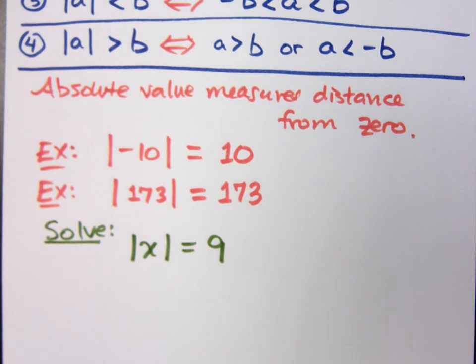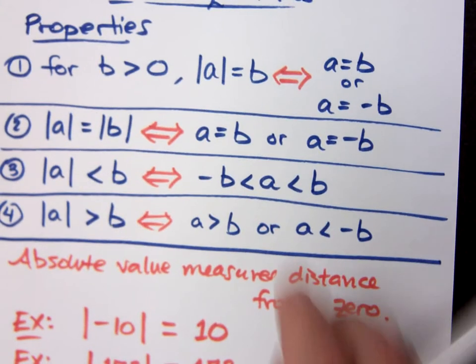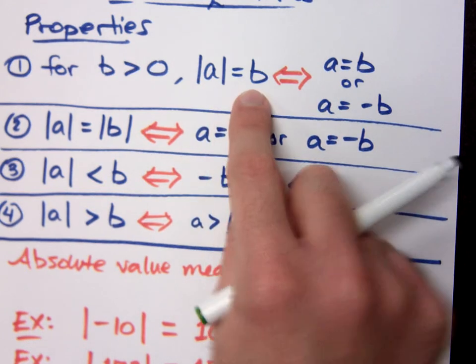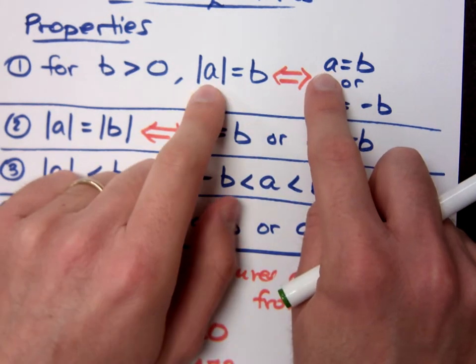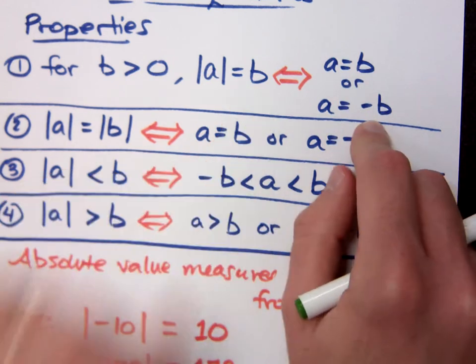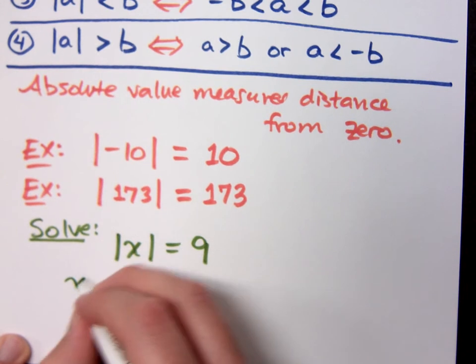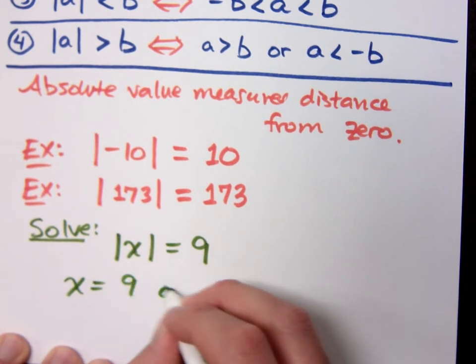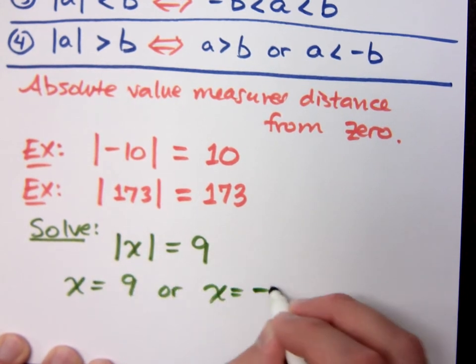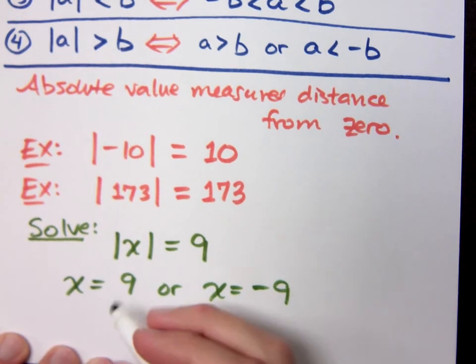And that matches up with what we set up here for that first property. That means that if you have this absolute value, that means that the inside is equal to that constant or the negative of that constant. So it means from here, x is equal to 9 or x equals negative 9.